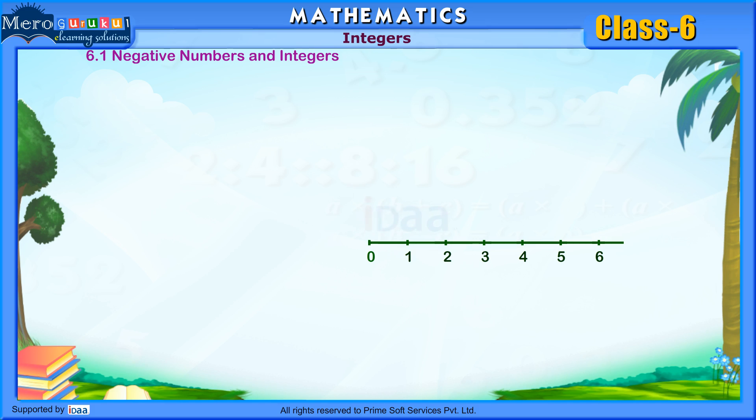Suppose we place a mirror at 0, facing numbers 1, 2, 3, 4, and so on, we get image of the part of the line extending in the opposite direction. On this part of the line are points which are the images of 1, 2, 3, 4, and so on.